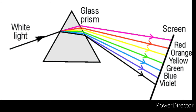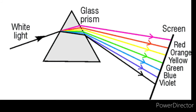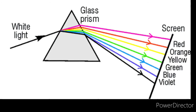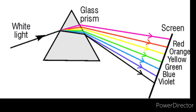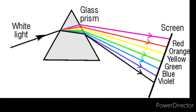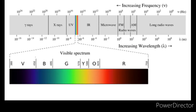Each color refracts at a certain different angle, creating a spectrum of colors. Now, each color of sunlight has a different frequency — also known as the rate of vibration. In sunlight, all colors travel in the form of waves called electromagnetic waves, and each color wave has particles that vibrate at a certain repetitive rate called frequency.